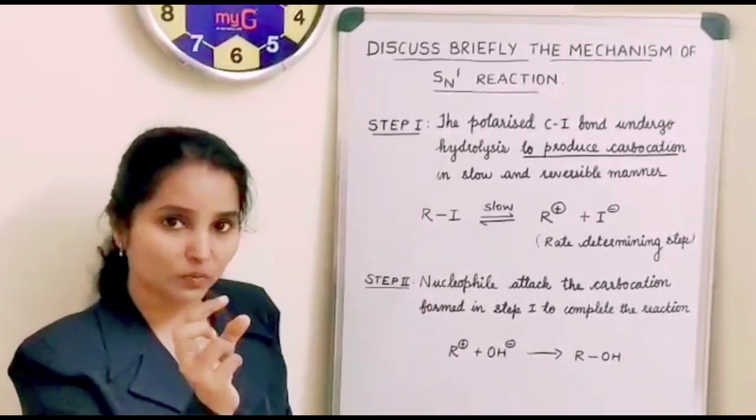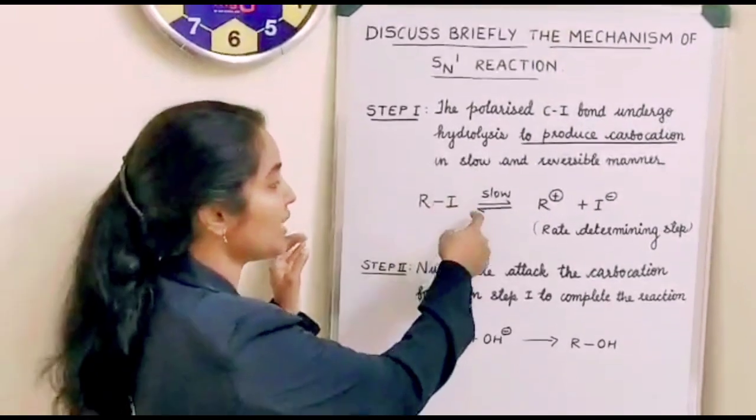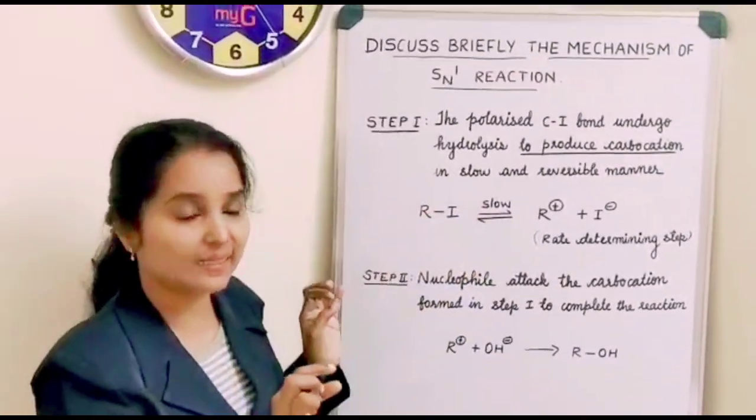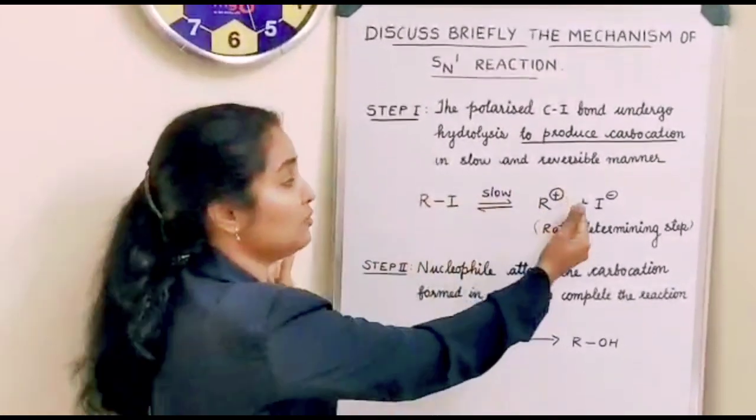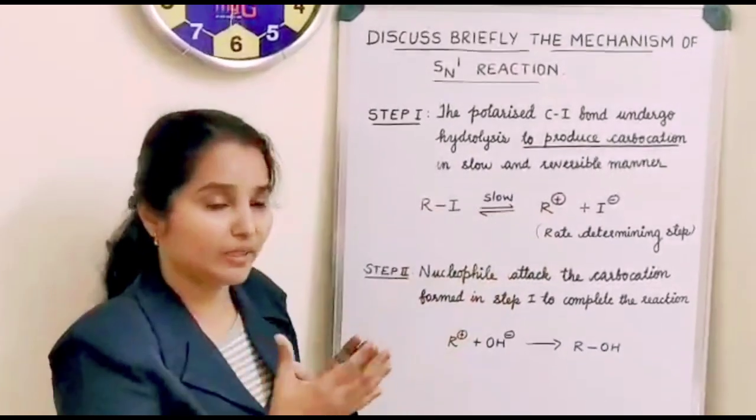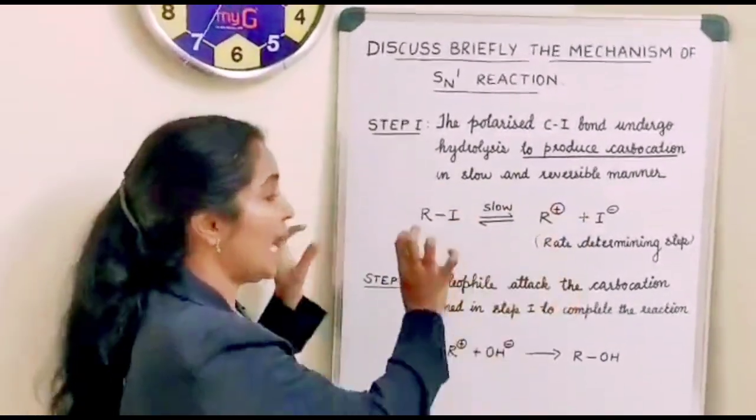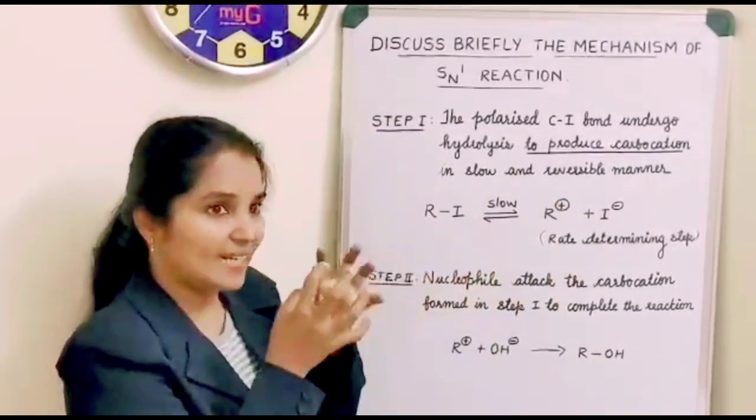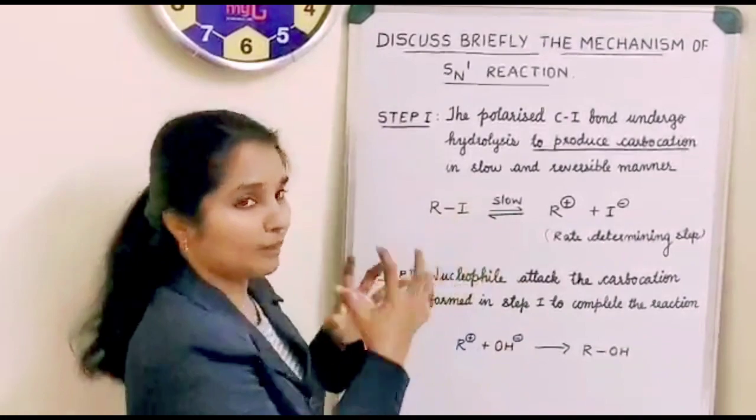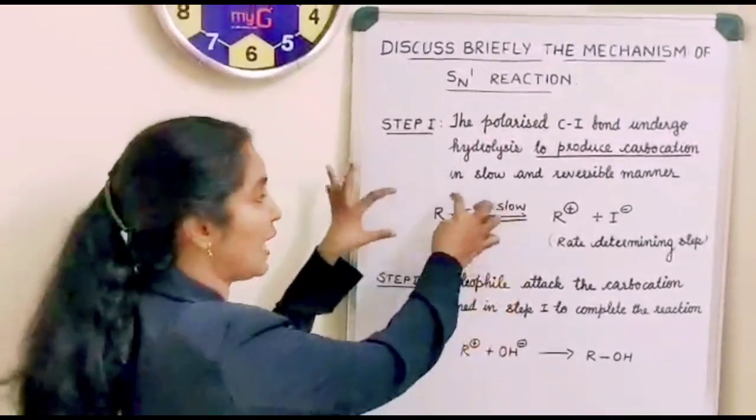Polar protic solvent, in that, the positive part will solvate this halide that is present in the alkyl halide and so it will favor the formation of carbocation. That means it will favor or it will induce stability to the formed carbocation as well as it will help. The energy acquired from the solvation of halide ion from this polar protic solvent will help the heterolysis of alkyl halide.